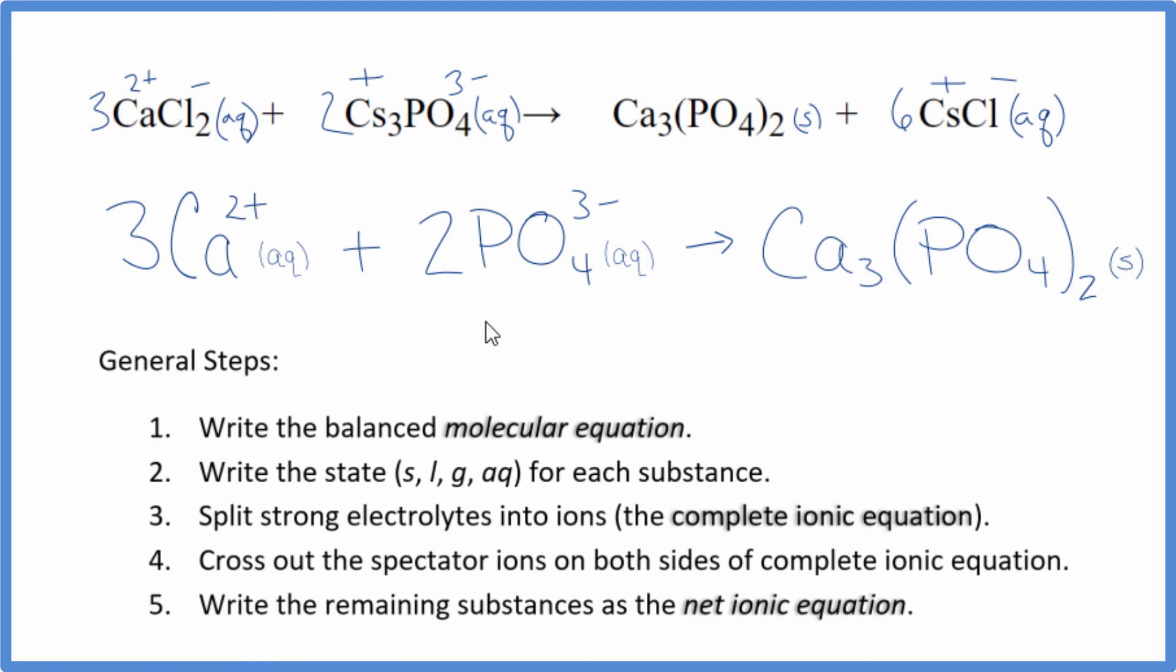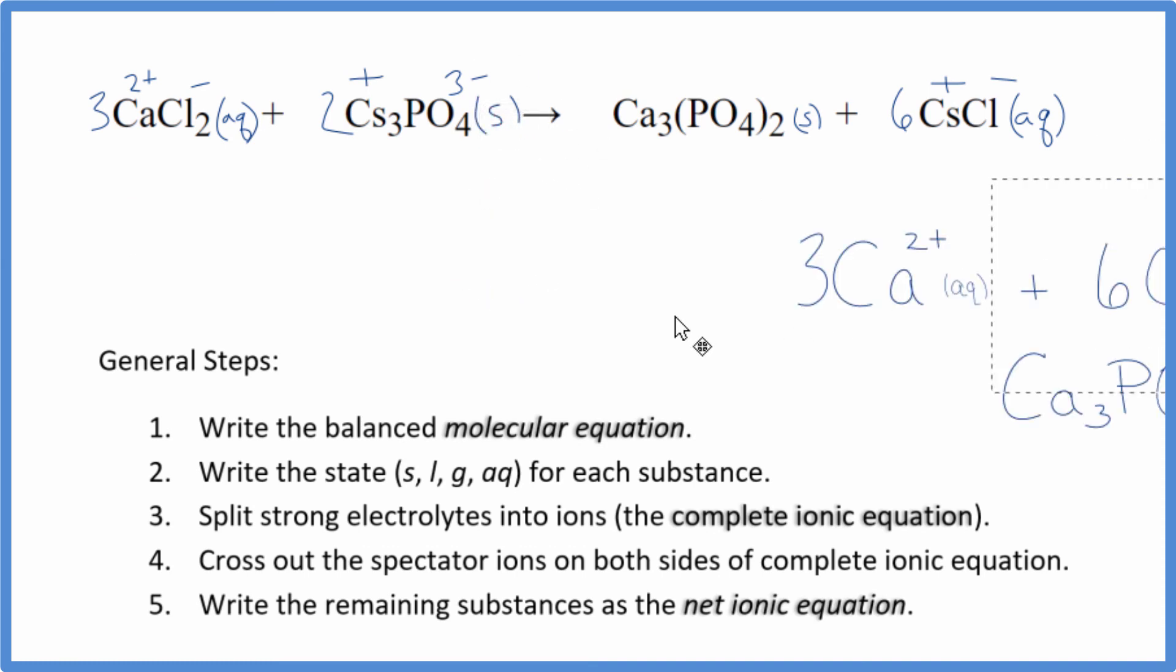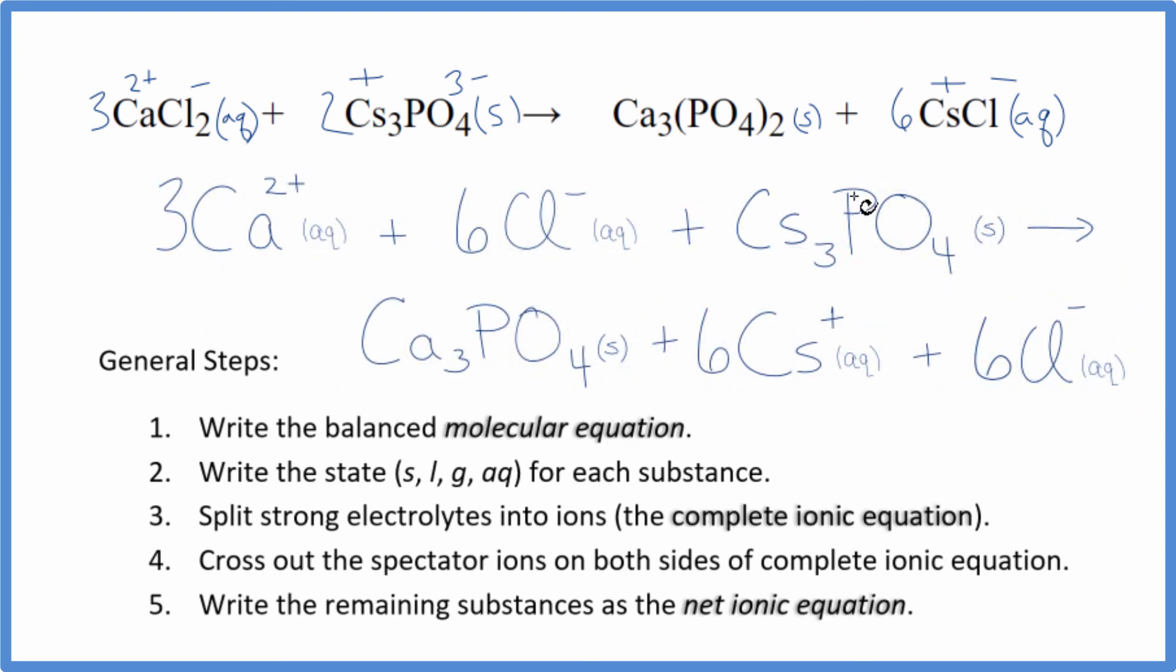Let me just quickly show you what you get if you treat this as a solid. So we change this to solid, and we end up with this. So this is our complete ionic equation, and then the spectator ions, these six chlorides, we get rid of those, and the rest of this, that would be our net ionic equation if we treated the cesium phosphate as a solid. I would expect, at a general chemistry level, your teacher would tell you whether this is aqueous or a solid.